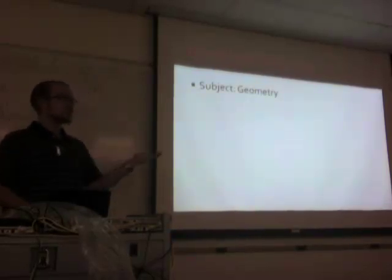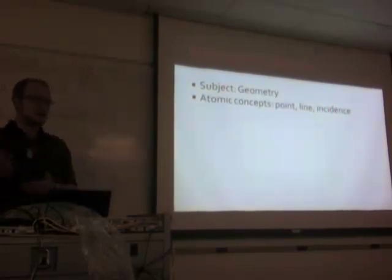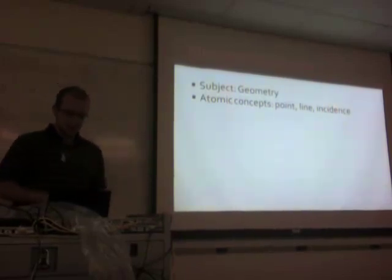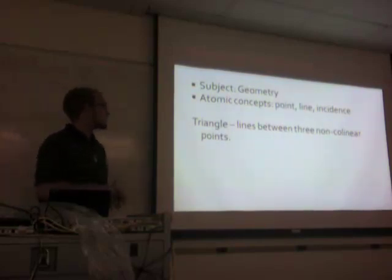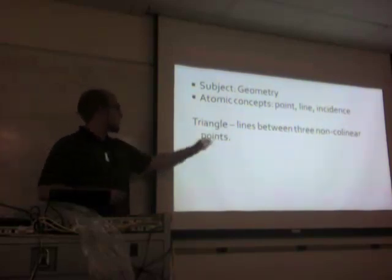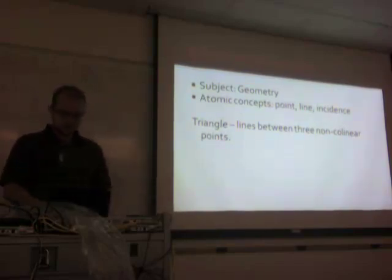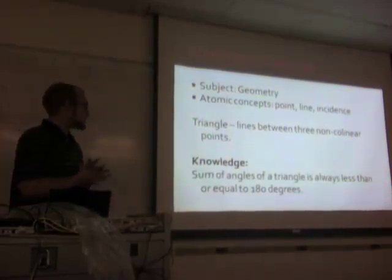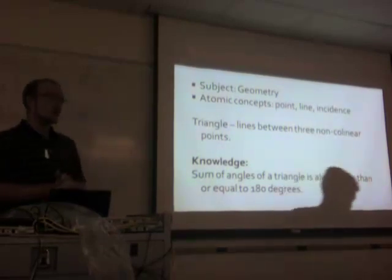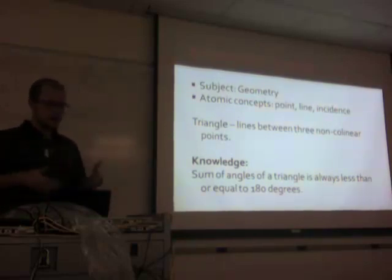Let's see an example. Take the subject of geometry. The atomic concepts of geometry are point, line, and incidence. We describe everything else in terms of these. When we talk about a triangle, we say that a triangle is made by joining three lines between three non-collinear points — we define things in terms of the smaller, previously defined things. An example of knowledge in geometry is that the sum of angles of a triangle is always less than or equal to 180 degrees. You can prove this statement is true, so this is why we call this knowledge.